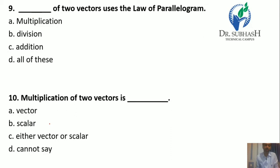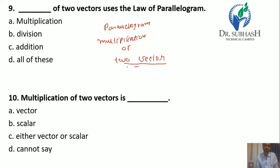Question 9: The blank product of two vectors uses the law of parallelogram. The parallelogram law is used for the addition of two vectors. So the answer is A.